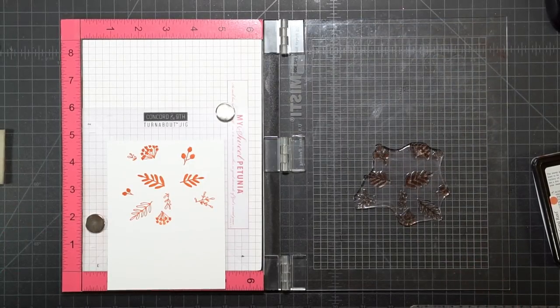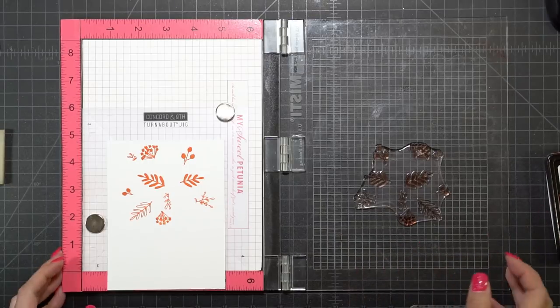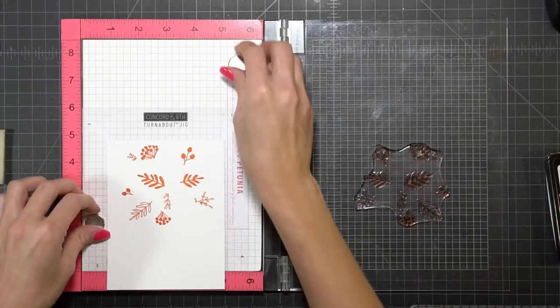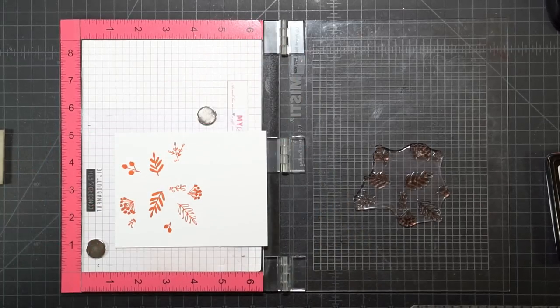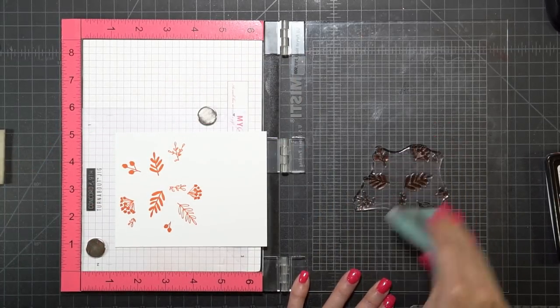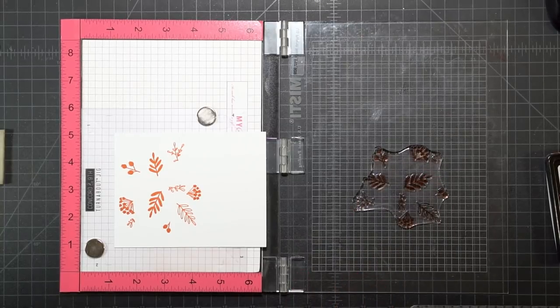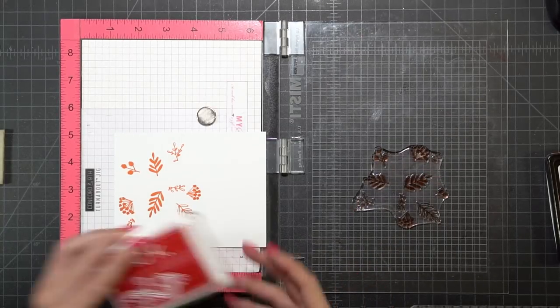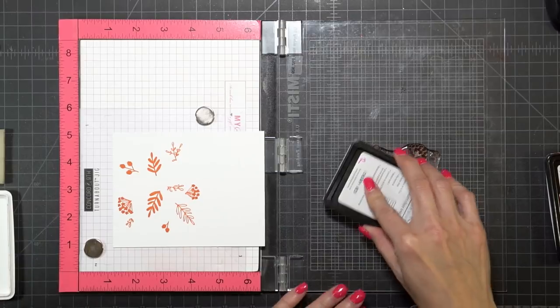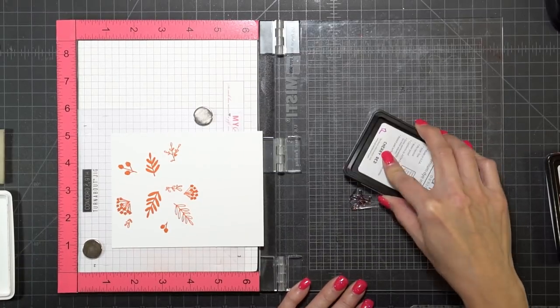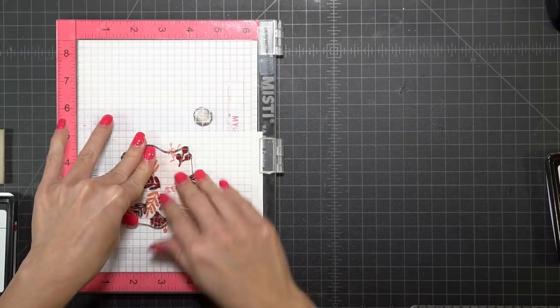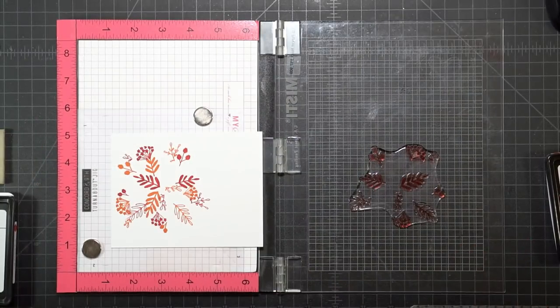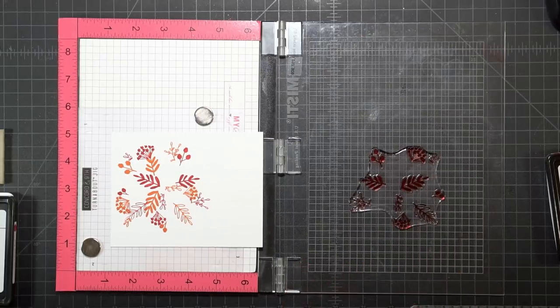I'm going to clean off my stamp with my Lawn Fawn Chammy. I want to make sure all of the color is off before I do the next step and that my stamp is dry. The next color I'm going to use is Gina K Cherry Red. This color does stain your stamps, so once you use it, it's going to be that color.